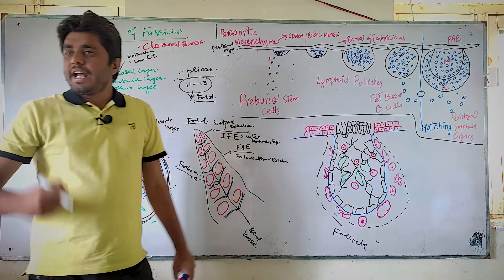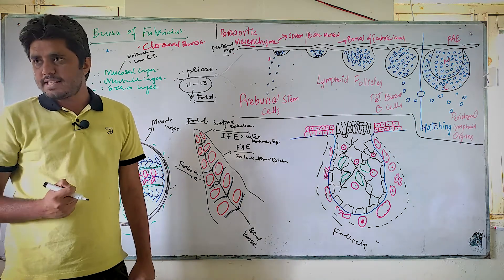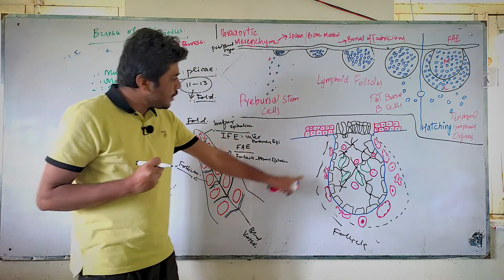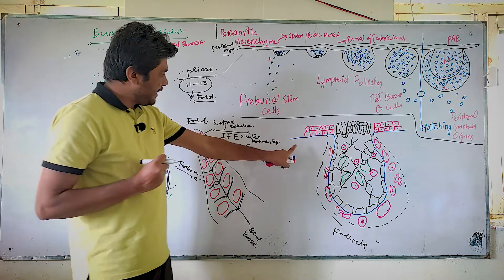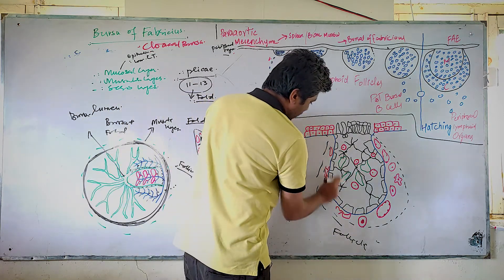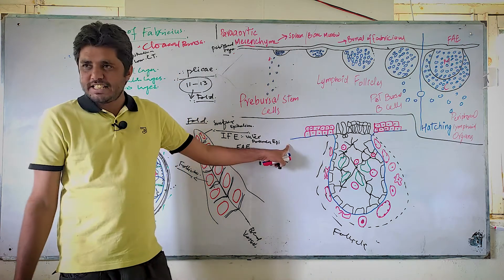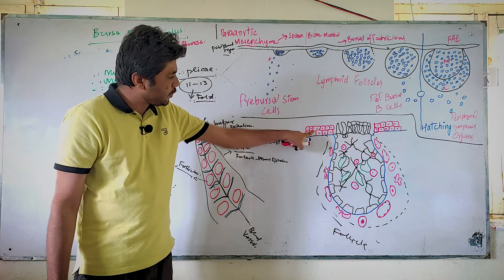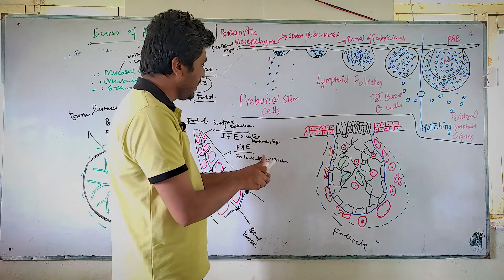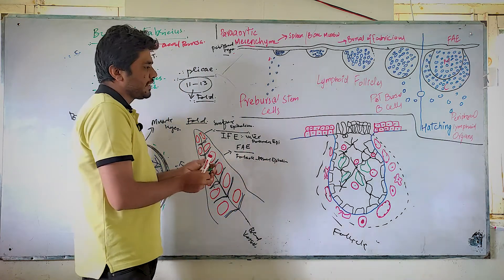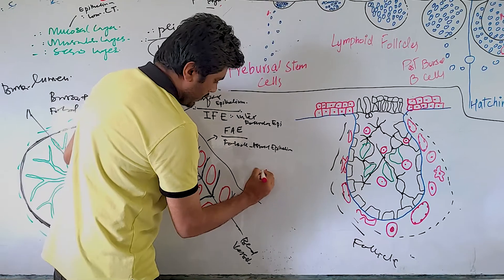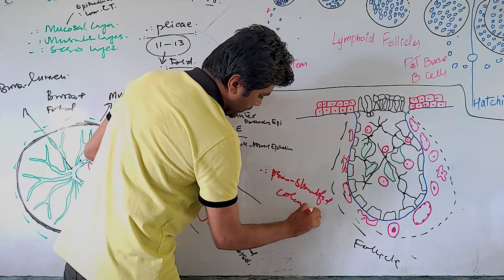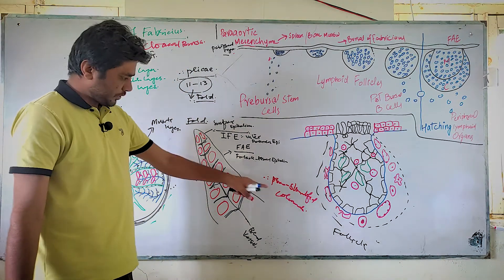When we look at what kind of epithelium the Bursa of Fabricius has, we pick one follicle. The blue line represents the basement membrane, or basal lamina. The epithelium of the Bursa of Fabricius is known as pseudostratified columnar epithelium.